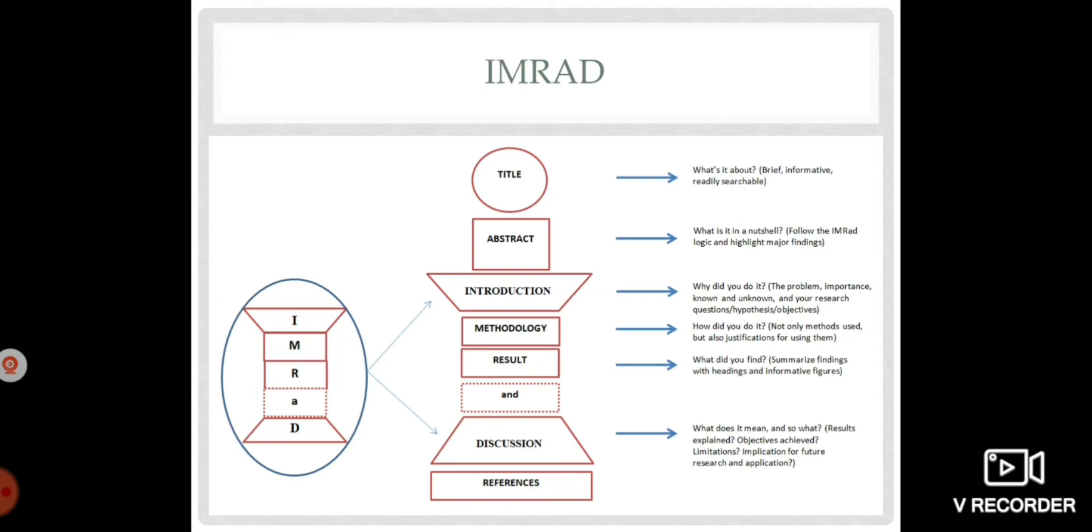The abstract is a short summary of your completed research. Take note, completed research. The abstract should only be 150 to 250 words. Your abstract will be only maximum of 250 words. The abstract is intended to describe your work without going into great detail. Your abstract should be intelligible on its own, meaning the readers will know what the entire paper is all about without having them read the whole paper.